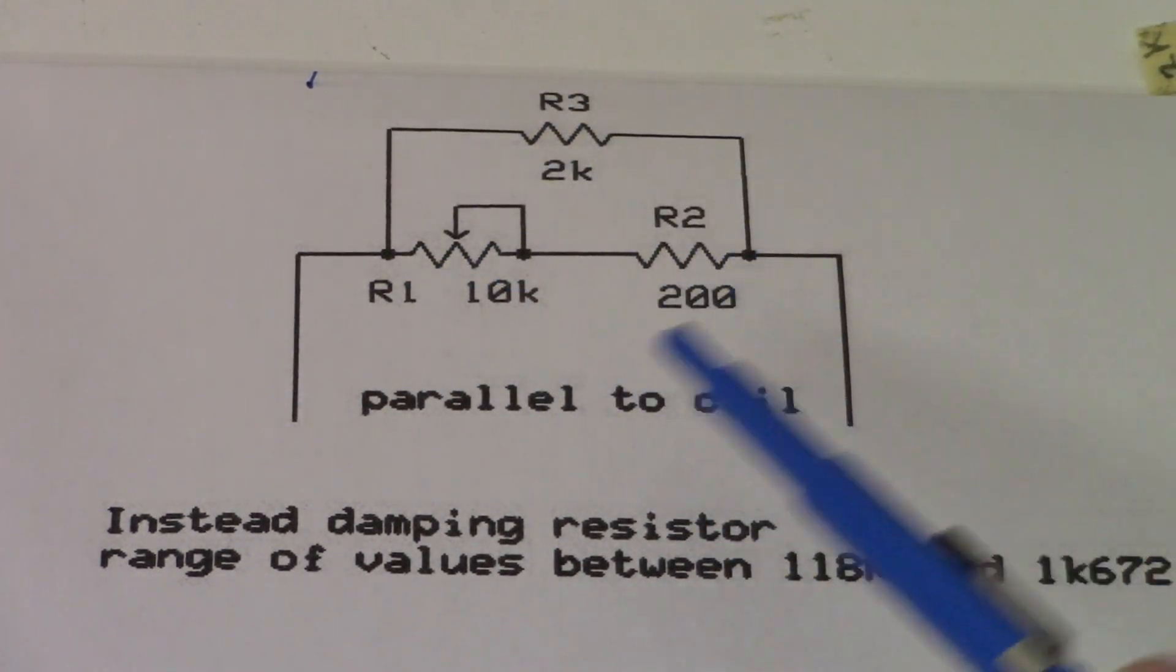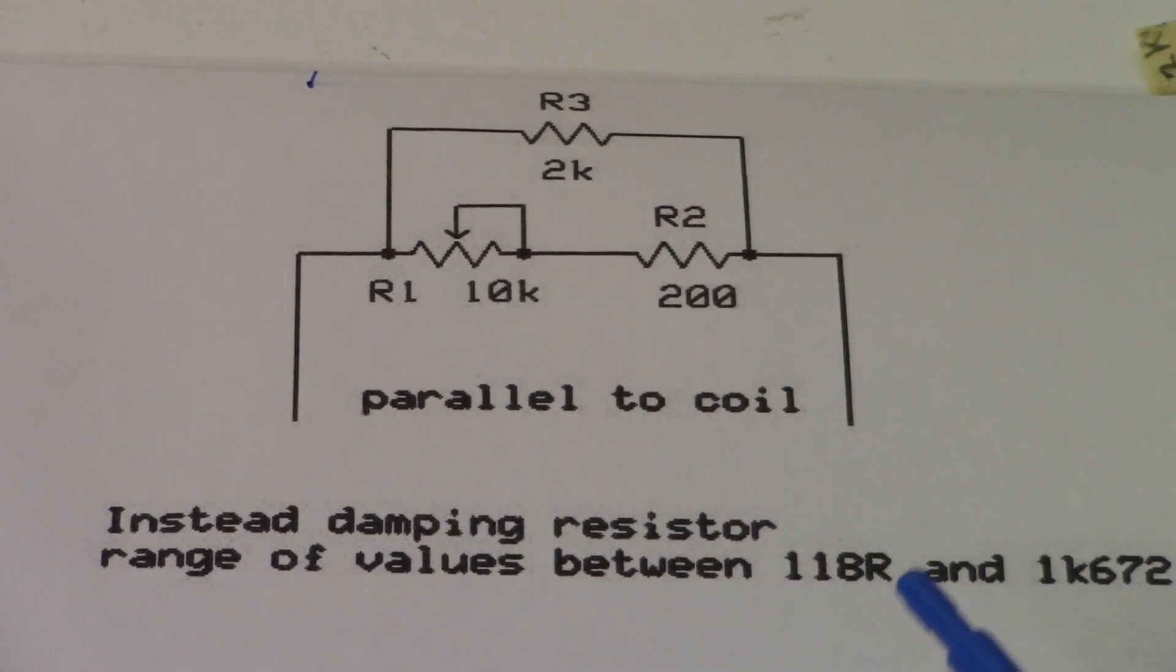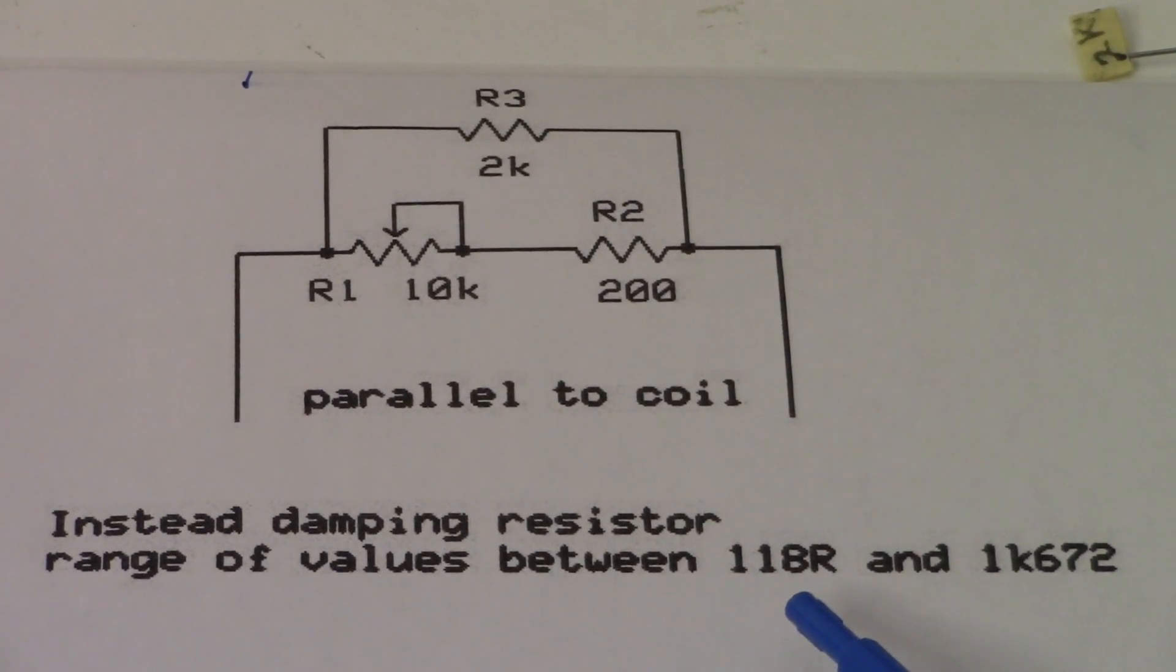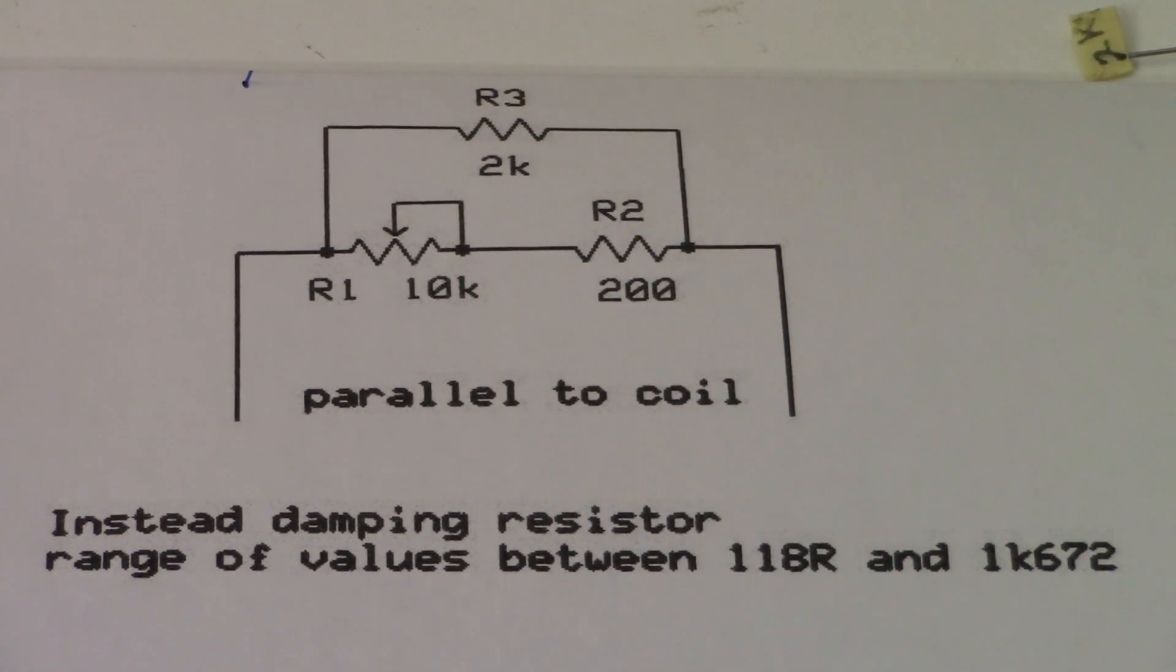So you can see down here that this is going to give us approximately 118 ohms up to 1672 ohms as we adjust the potentiometer. And I'll explain that math later, it's really simple.